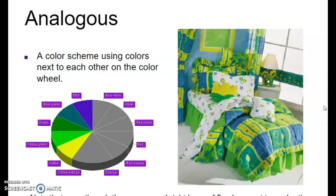Then we have analogous — a color scheme that uses colors next to each other on the color wheel. For example: blue, blue-green, green, yellow-green, and yellow. It may be just two colors next to each other, or three, but in this case we have five, and you can see that displayed here in this example picture.